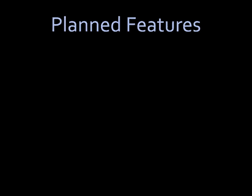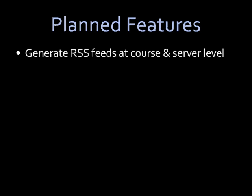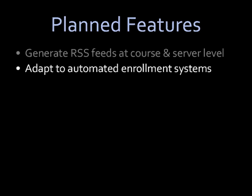Let me end by talking about some of the planned features for upcoming versions of OpenShare. First, we want to generate RSS feeds at the course and at the server level. At the course level, this would mean an RSS feed that includes all open activities or resources, and at the server level, an RSS feed of any course that has open content or updated open content. We also want to adapt the OpenShare group and groupings to automated enrollment systems, ensuring that new registered students automatically have access to all the resources without the teacher having to click Update Groups.